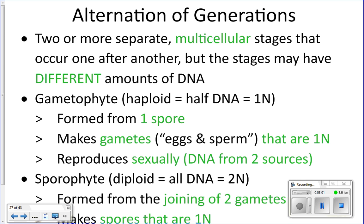One stage is haploid and one is diploid. Haploid means half the amount of DNA, diploid means the full set. Your body cells are diploid with 46 chromosomes, while sex cells like eggs or sperm are haploid with half the DNA. When you reproduce, the egg and sperm come together to give the full set of DNA.